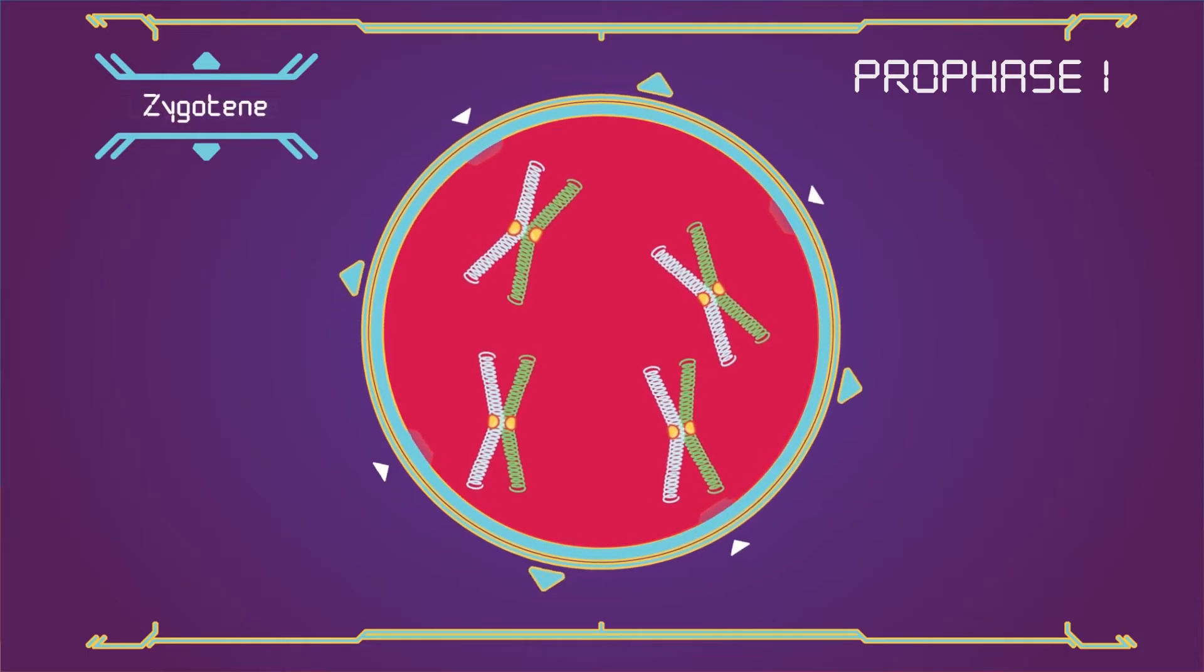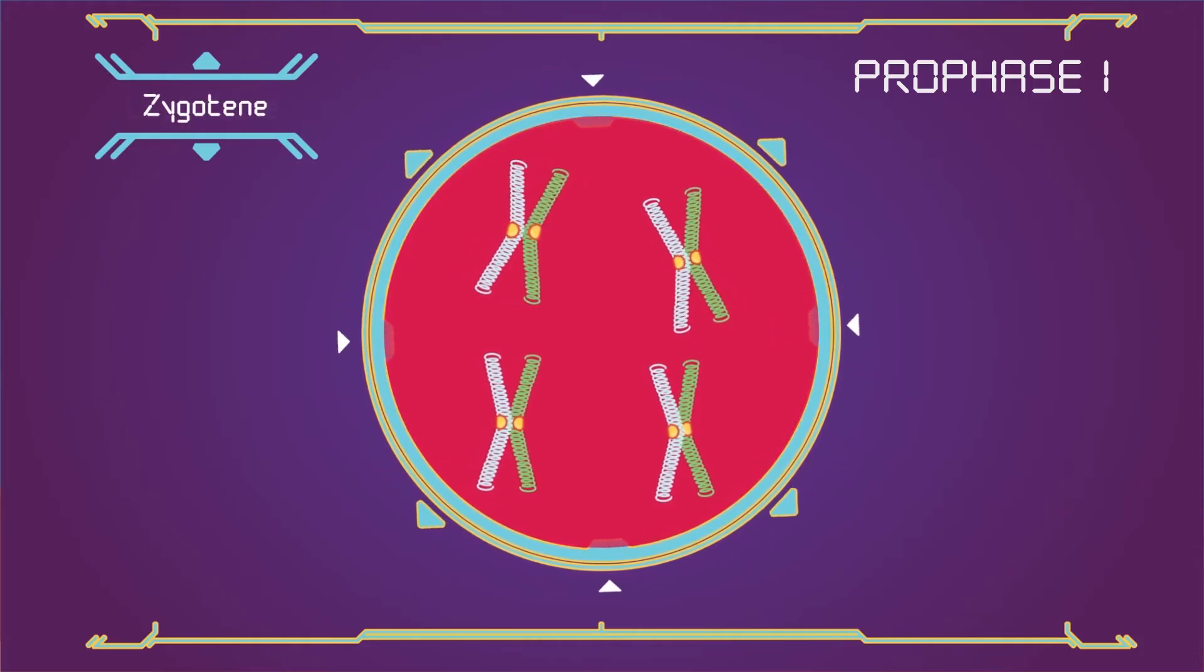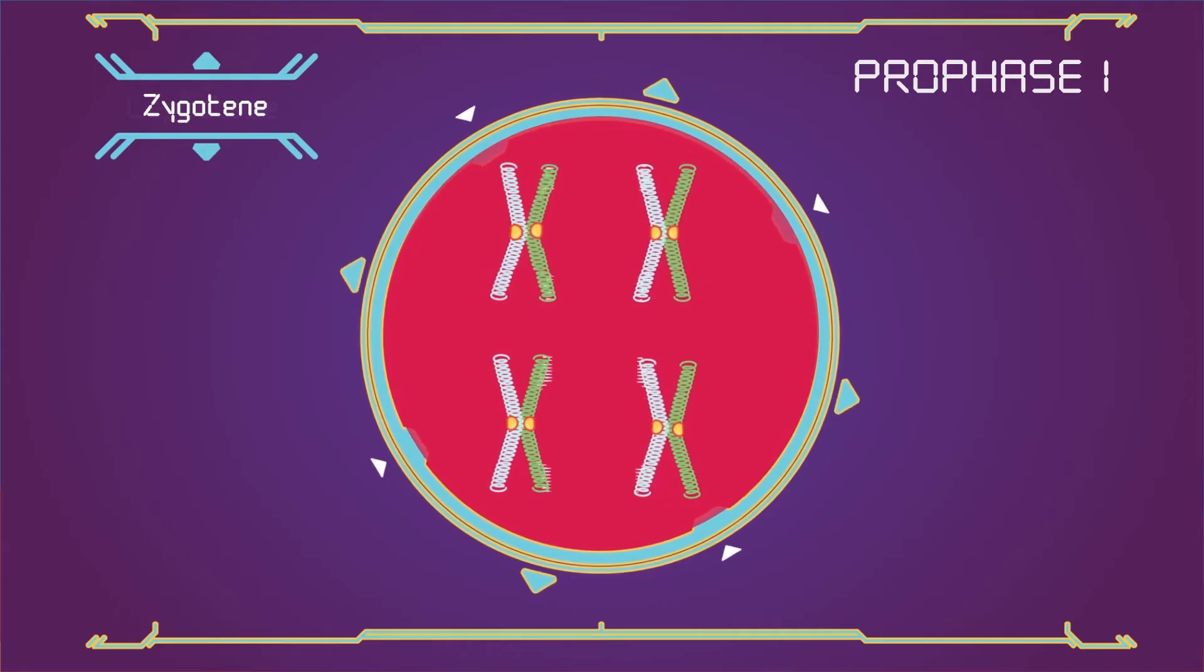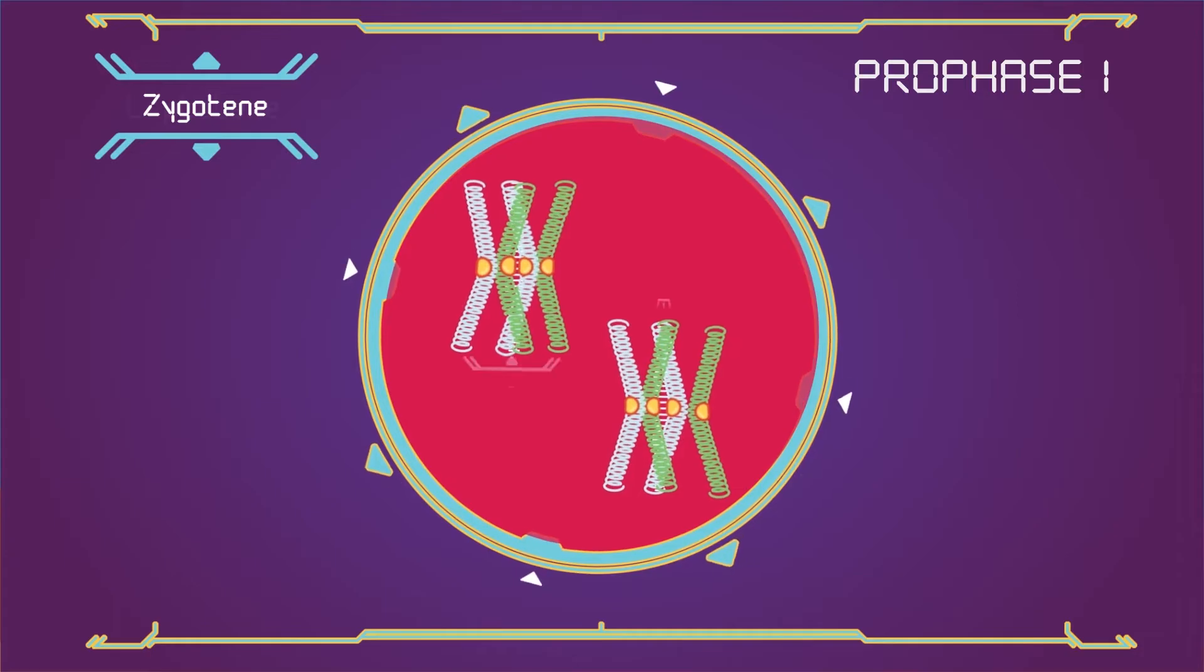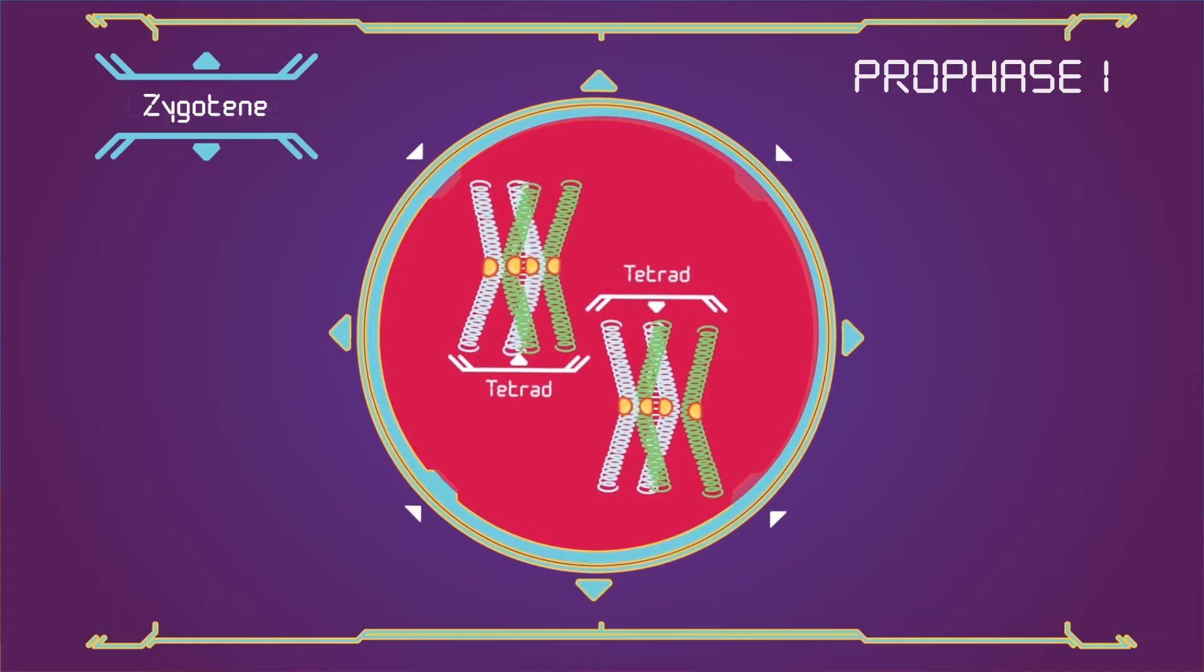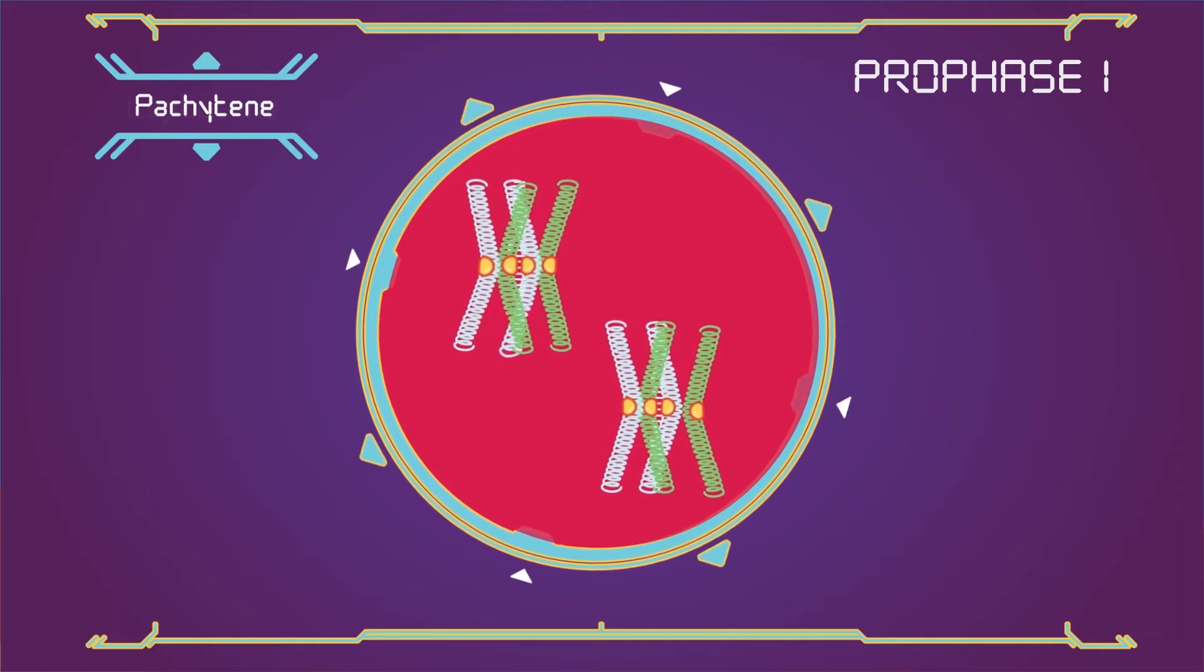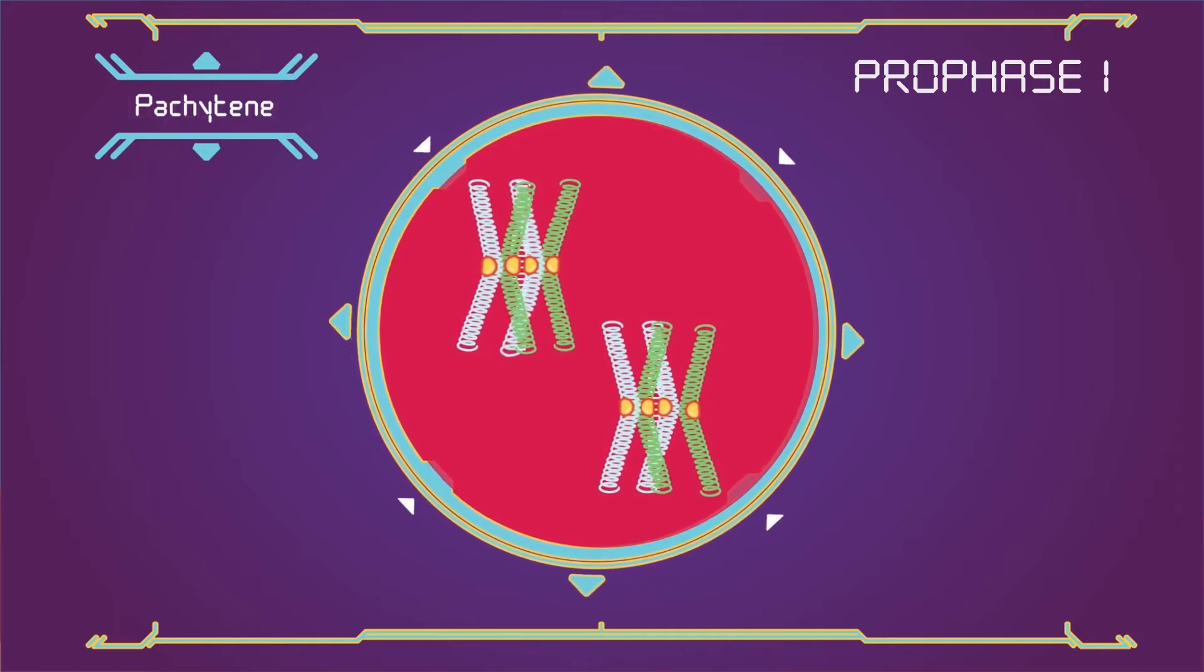Zygotene. Chromosomes approximately line up with each other into homologous chromosome pairs through synaptonimal complex. The paired chromosomes are called bivalent or tetrad chromosomes.